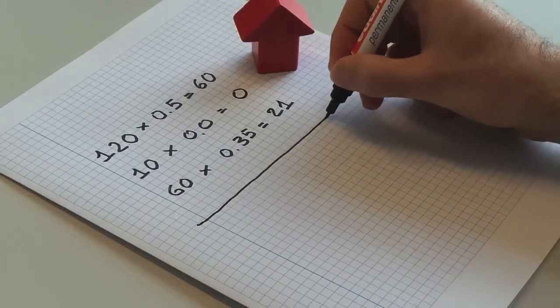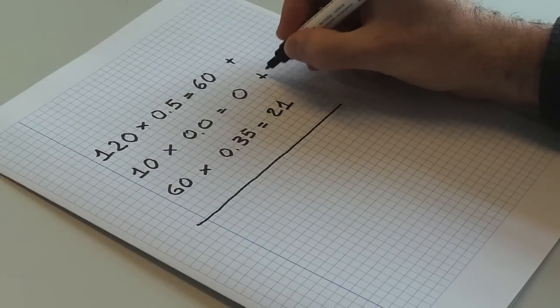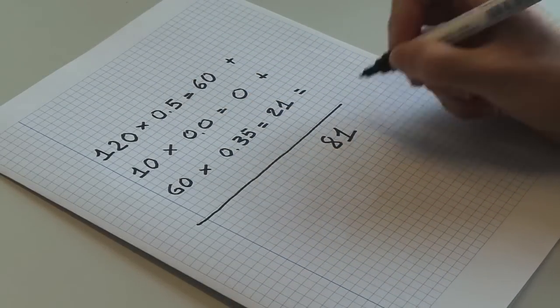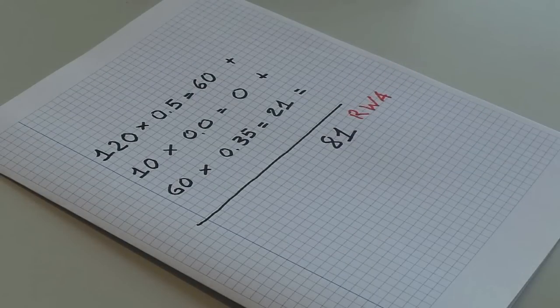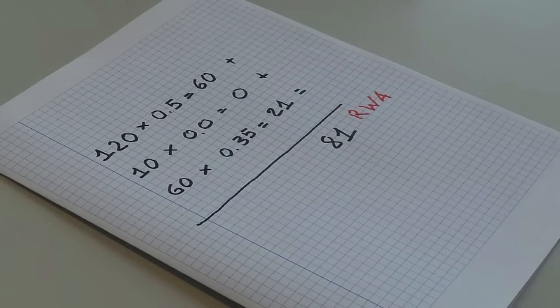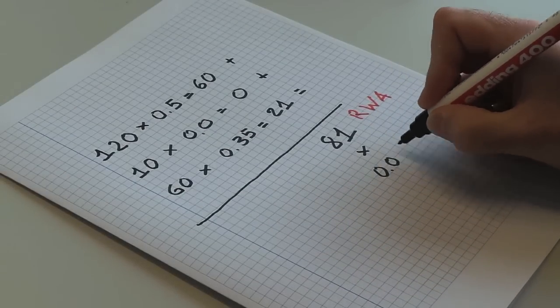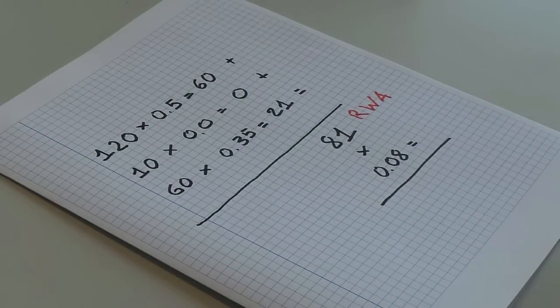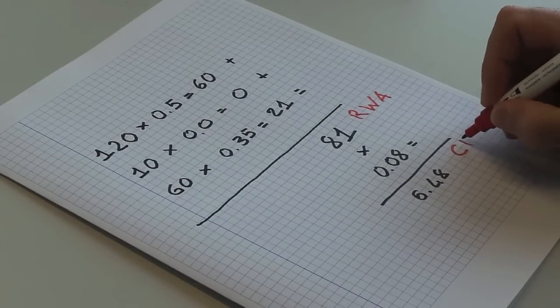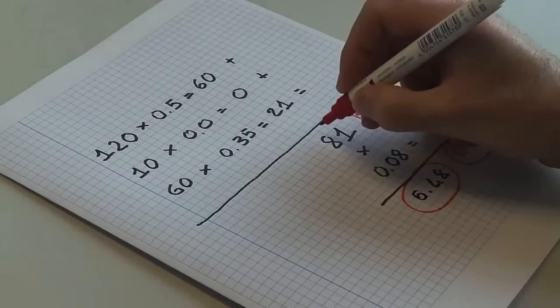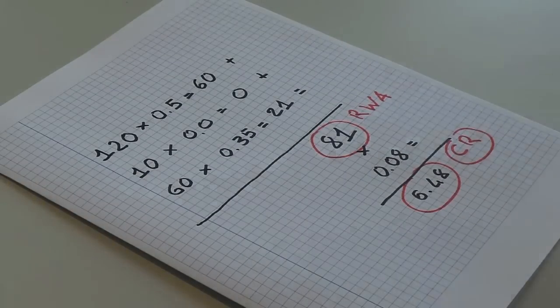Now we sum up: 60, 0, and 21, and we get 81. That is the value of our risk-weighted assets in this exercise. Obviously, the computation in real life includes many more items, often very difficult to assess precisely, but the idea is exactly the same. What are the capital requirements for credit risk? In this case, we simply multiply 81 by 0.08 or 8 percent. The result is 6.48. This is our capital requirement. Well done, risk managers!